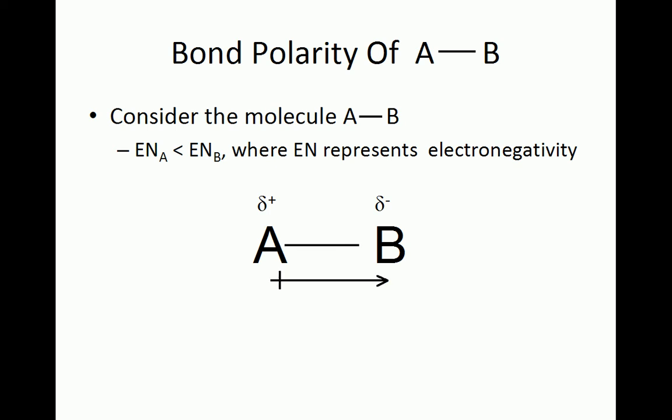For larger molecules with more than one polar bond, this arrow points in the direction of the net dipole moment if the individual dipole moments of each bond don't cancel one another out.